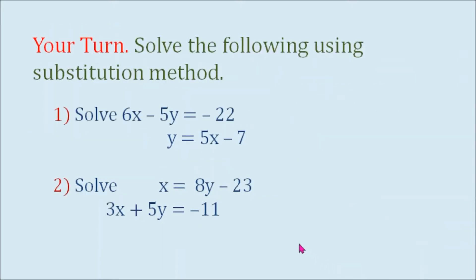Now, your turn. Solve the following using the substitution method. Number 1: Solve 6x minus 5y equals negative 22 and y equals 5x minus 7. Number 2: Solve x equals 8y minus 23 and 3x plus 5y equals negative 11. You can pause the video and take your time working on these two items. Now I will show you the answers.